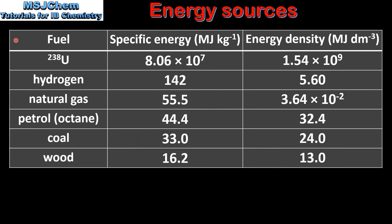Finally, we will compare the specific energy and energy density of different fuels. In this table we have uranium, hydrogen, natural gas, petrol which is mainly octane, coal, and wood. Uranium has a very high specific energy and also a very high energy density, meaning it is a very effective fuel. Hydrogen has a relatively high specific energy but a low energy density. Natural gas, petrol, and coal, which are all fossil fuels, have relatively high specific energies. With the exception of natural gas, they also have relatively high energy densities. Wood has a relatively low specific energy and energy density.